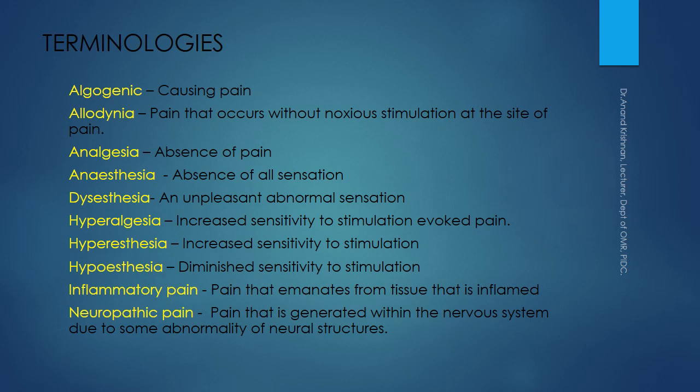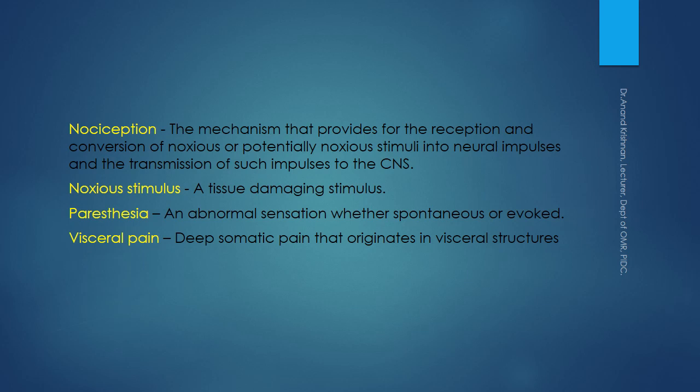Key terminology: allodynia is pain that occurs without noxious stimulation at the site of pain. Algesia is absence of pain. Anesthesia is absence of all sensation. Dysesthesia is an unpleasant abnormal sensation. Hyperalgesia is increased sensitivity to stimulation. Inflammatory pain emanates from inflamed tissue. Neuropathic pain is generated within the nervous system due to abnormality of nervous structures. Nociception is the mechanism providing reception and conversion of noxious stimuli into neural impulses. Paresthesia is an abnormal sensation, spontaneous or evoked. Visceral pain is deep somatic pain originating from visceral structures.